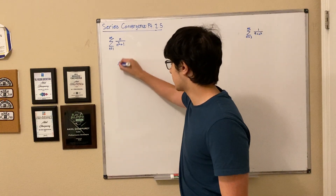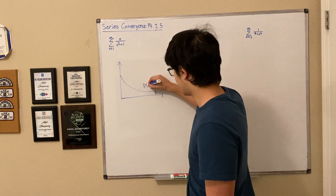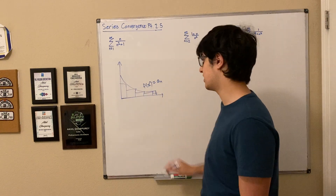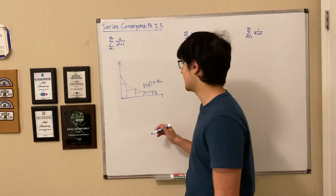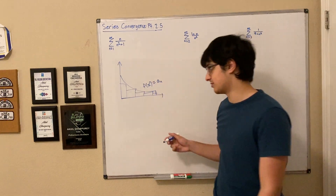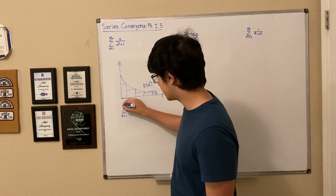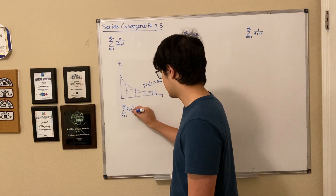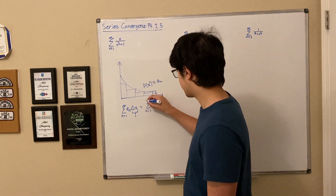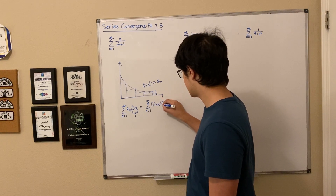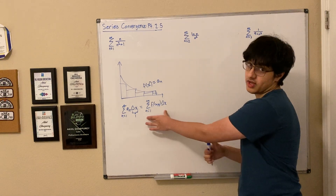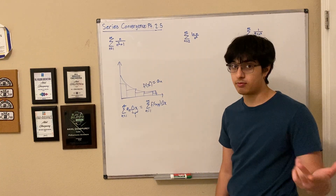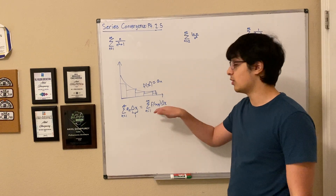Just to recap: the integral test tells us that if we have a function f(x) and we set that equal to an infinite sequence a_n, we can take the integral or the area under f(x). We can argue that the infinite series from 1 to infinity of a_n is a rectangular approximation with a delta x of 1 — this is what we call a Riemann sum. We can take the limit of this Riemann sum and turn it into an integral. So an infinite series and an improper integral from 1 to infinity will behave in the exact same manner.